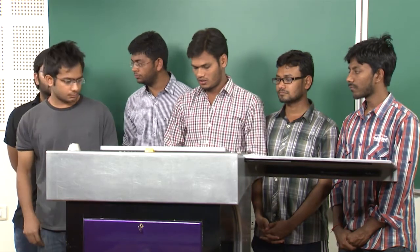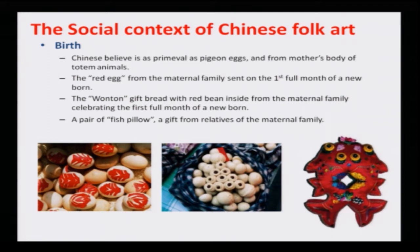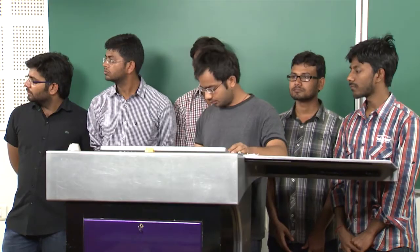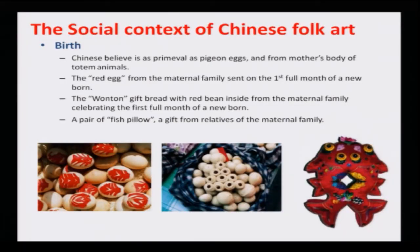For the social context, it is very important to discuss this because Chinese folk art is made by the workers. First, we should talk about birth. The Chinese believe life is as permeable as pig and axe, and they believe it comes from the mother's body of totem animals. When a child is born, they give a paper cut — shown on the left — to the family, representing prosperity so that the child can grow and be strong. The middle picture is called wanton and is also given when a new child is born.